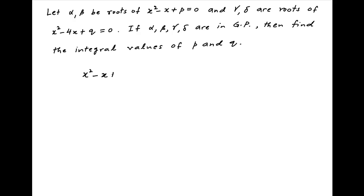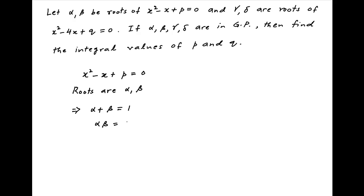We are given the quadratic equation x squared minus x plus p equals 0, whose roots are alpha and beta. Therefore, the sum of the roots alpha plus beta is equal to 1, and the product of the roots alpha times beta is equal to p.